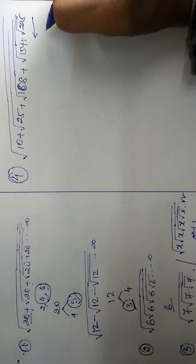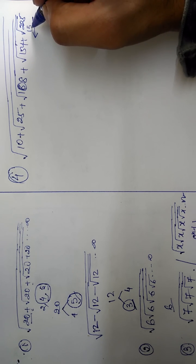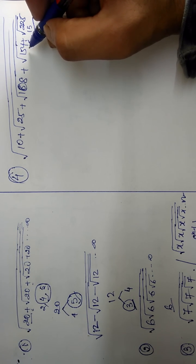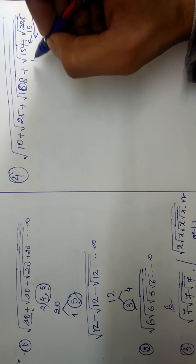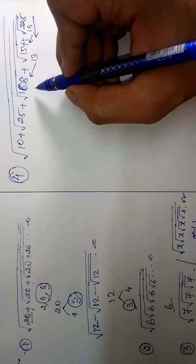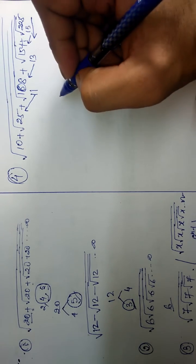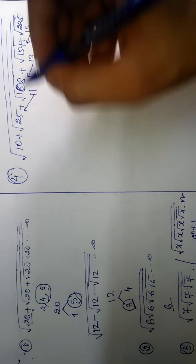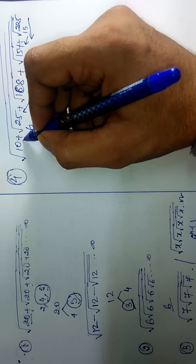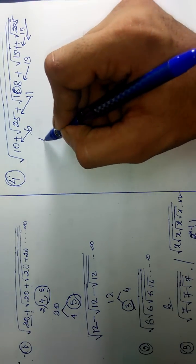Then what is the square root of 225? It is 15. Add this 15 to 154, then it becomes 169. What is the square root of 169? That is 13. Add this 13 to 108. While adding, we got 121. Then what is the square root of 121? That is 11. Add this 11 to 25. It becomes 36. Then what is the square root of 36? It is 6. Add this 6 to 10. It becomes 16. Then what is the square root of 16? It is 4. This is the answer.